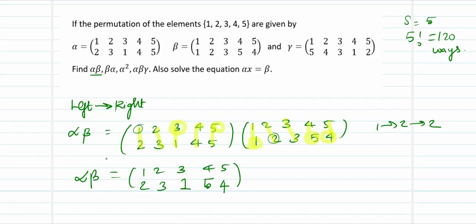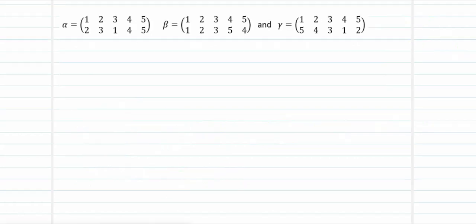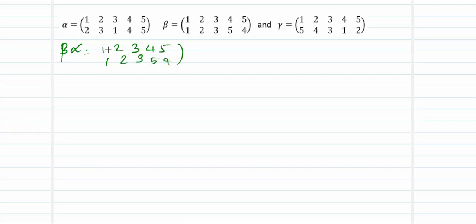The second question asks about beta alpha. So let me compute the value of beta alpha. When I want the value for beta alpha, I will be placing beta first and then alpha next: beta is (1, 2, 3, 4, 5) → (1, 2, 3, 5, 4), followed by alpha which is (1, 2, 3, 4, 5) → (2, 3, 1, 4, 5). The combination will again have domain (1, 2, 3, 4, 5).